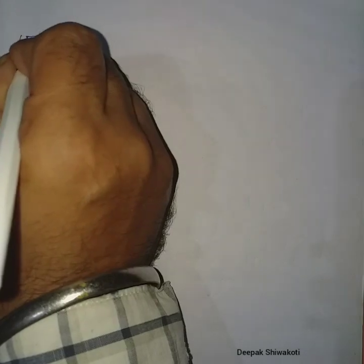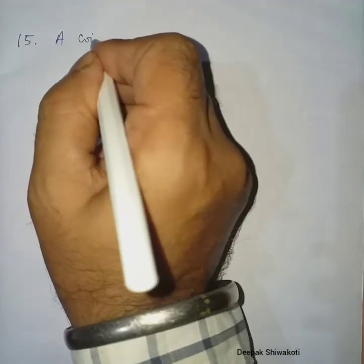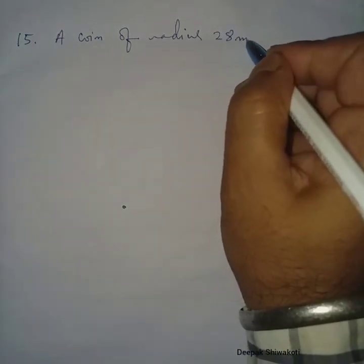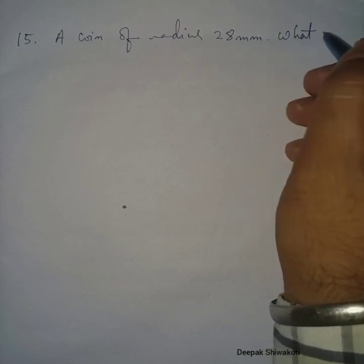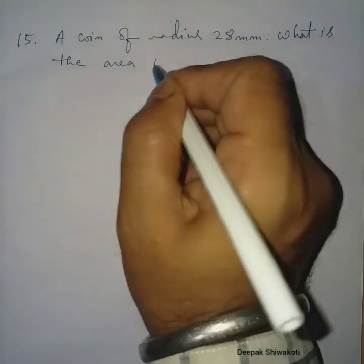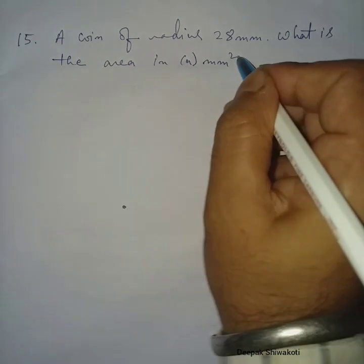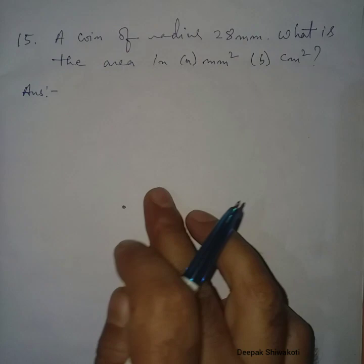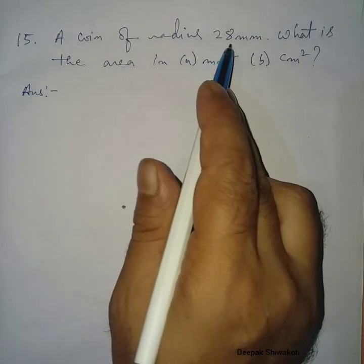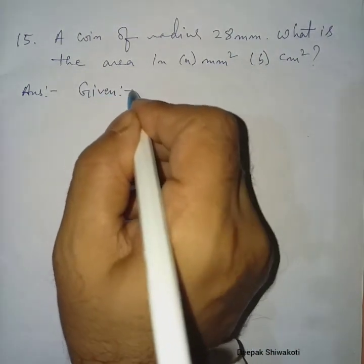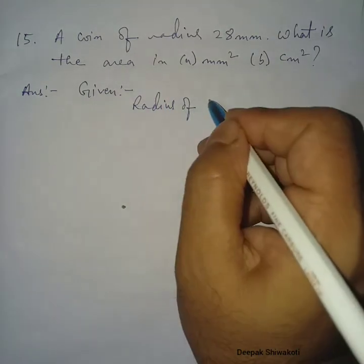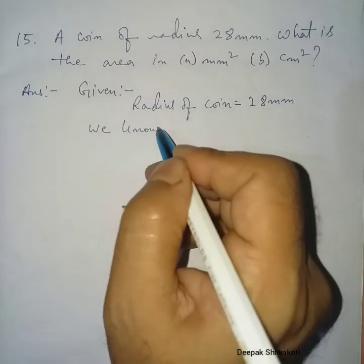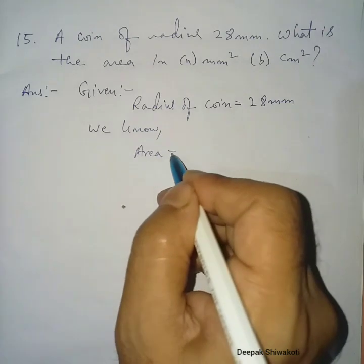Question number 15. A coin has a radius of 28 millimeters. When radius is given, we are working with a circle. We need the area in millimeter square for part A and in centimeter square for part B. Given: radius of coin equals 28 millimeters. We know the formula: area of a circle equals pi r squared.